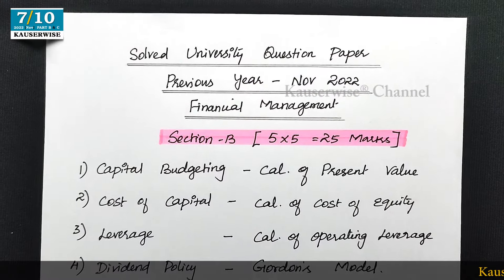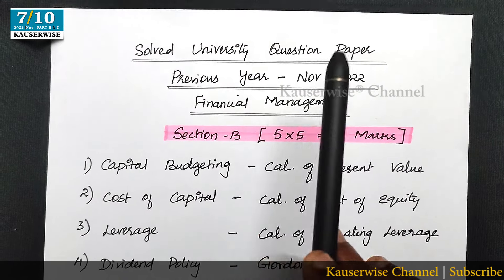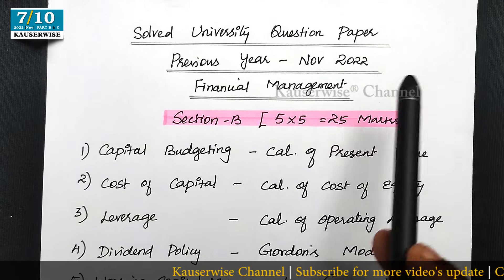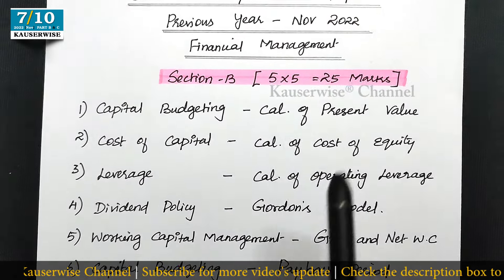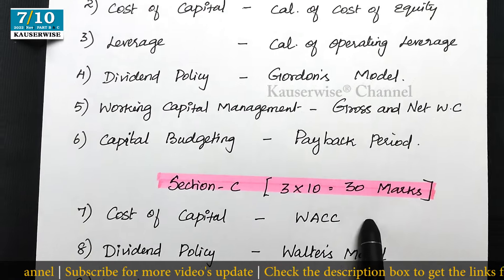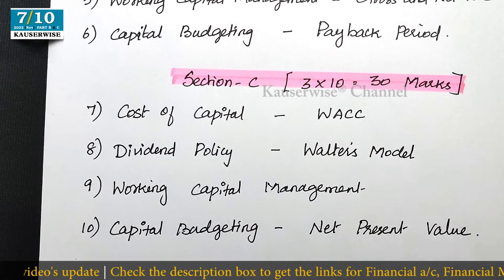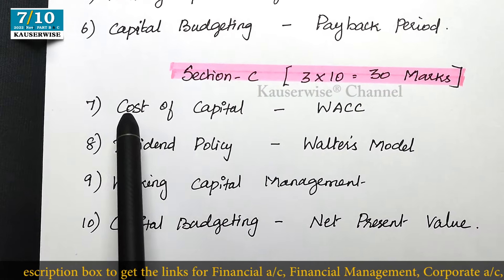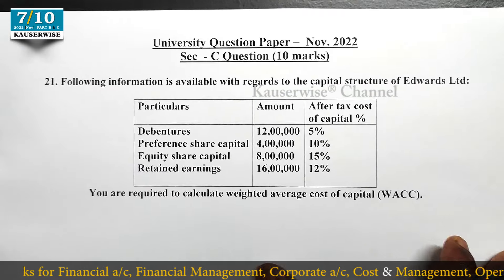Hi, welcome to my channel. This is Kauser Weiss and this is the continuation video of solving previous year university question paper — November 2022 Financial Management. We are solving Section B 5-mark questions and Section C 10-mark questions. You can find the playlist link in the description box. In this video we are going to solve Section C 10-mark question, first one: Cost of Capital. Now let's get into the video.